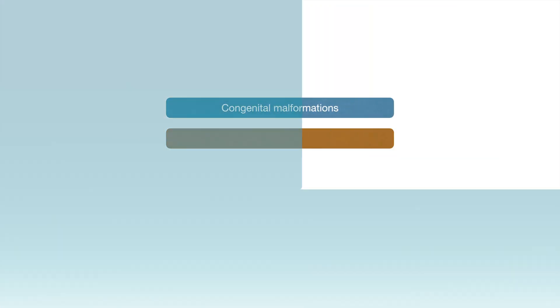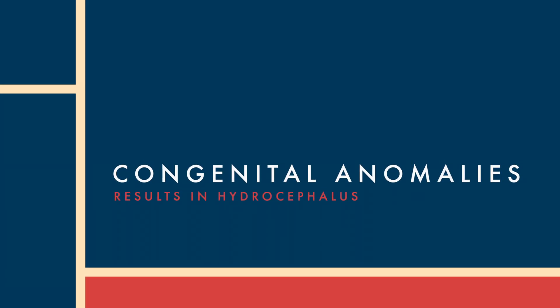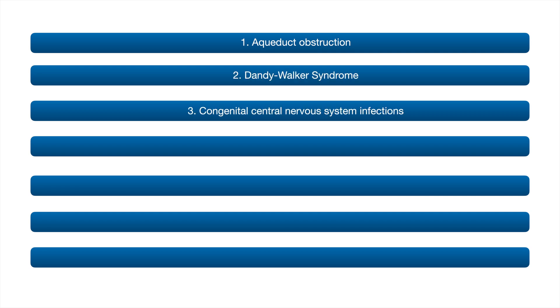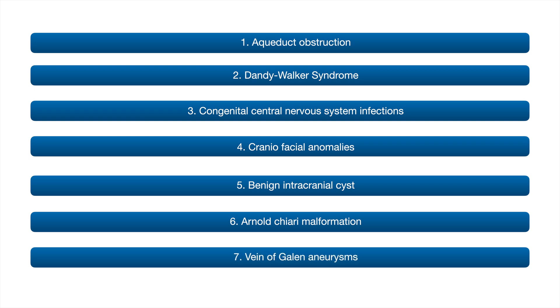Now, the causes of hydrocephalus can be due to congenital malformations and acquired causes. Congenital anomalies include: aqueduct obstruction, Dandy-Walker syndrome, congenital central nervous system infections, craniofacial anomalies, benign intracranial cysts, Arnold-Chiari malformation, and vein of Galen aneurysms.